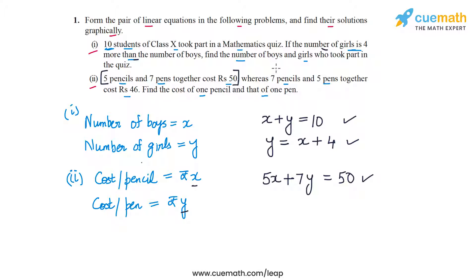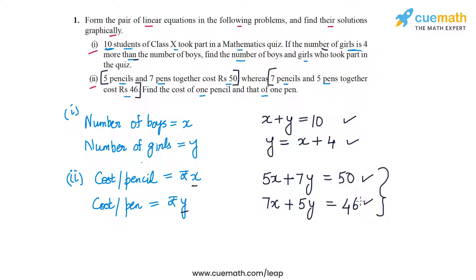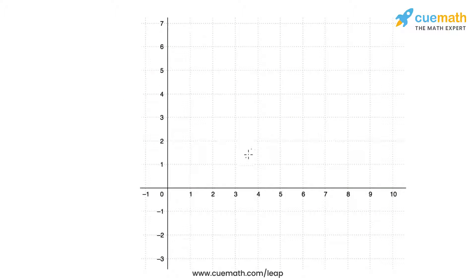The second part of the statement says 7 pencils and 5 pens together cost Rs 46. So 7 pencils cost 7x and 5 pens cost 5y, giving us 7x plus 5y equal to 46. This is our second linear equation in x and y and this is the pair of linear equations we have to solve. We will graph both of them and the point of intersection will be the required solution.